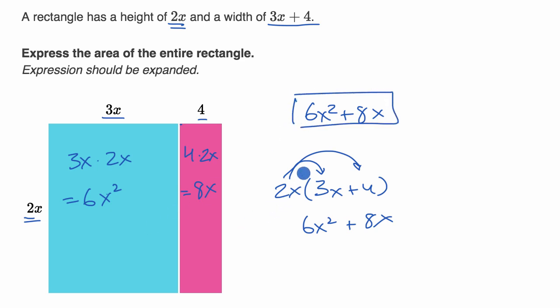Same idea. It's really just to make sure we understand that when we distribute a 2x onto this 3x and this 4, we can conceptualize it as figuring out the areas of the subparts of the entire rectangle.